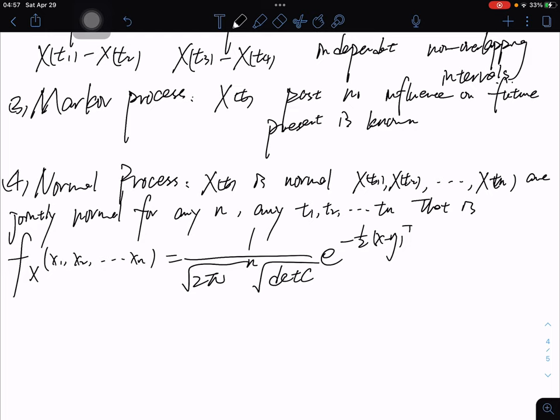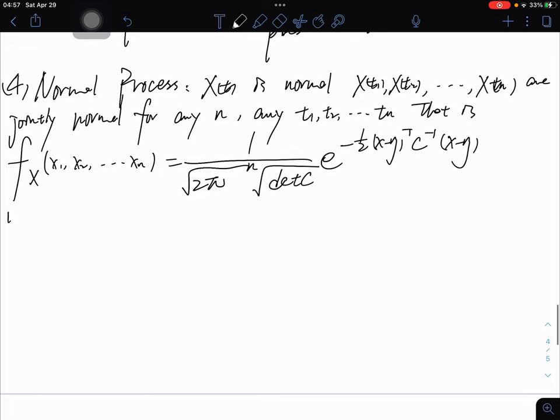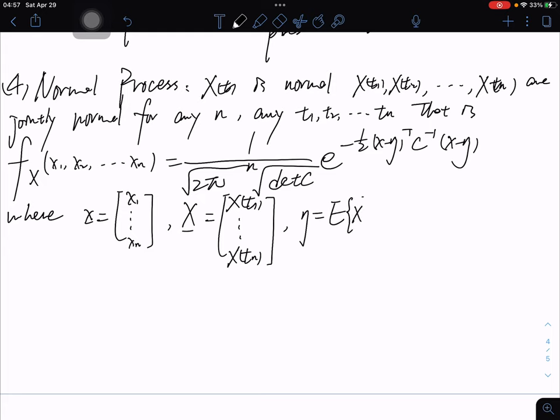Where x is the vector [x1, x2, ..., xn]^T, μ = E[X], and C = E[(X-μ)(X-μ)^T].